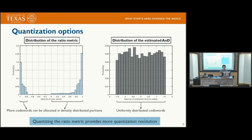There are several quantization options: the receiver can quantize the ratio metric and feed back the quantized version, or directly use the ratio metric to estimate the AOD and feed that back to the transmitter. Because the ratio metric is a nonlinear function of the power difference and power sum, it has a nonlinear distribution over the interval [-1, 1], allowing the codebook to be optimized so that more codewords are densely distributed within the denser regions of the distribution.